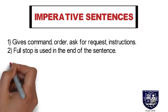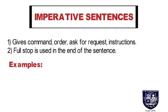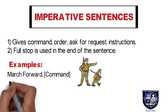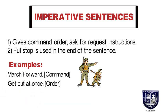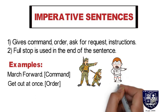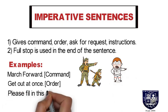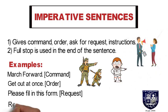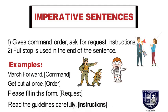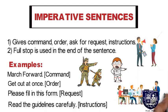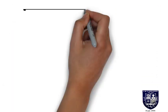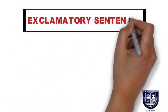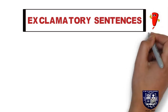Then we have the imperative sentence. An imperative sentence gives a command, order, request, or instructions, and it always ends with a full stop. For example: 'March forward' — a command. 'Get out at once' — an order. 'Please fill in this form' — a request. And 'Read the guidelines carefully' — that is an instruction.